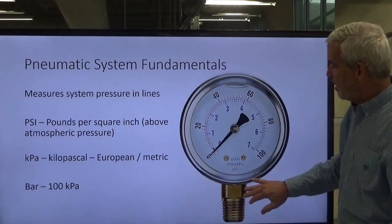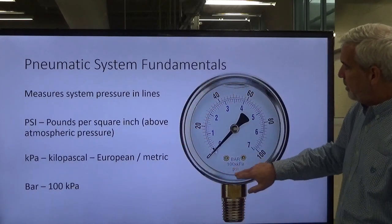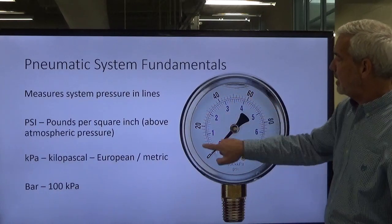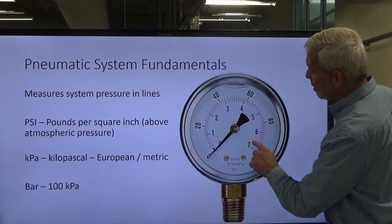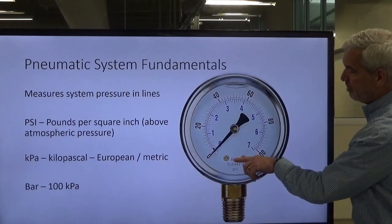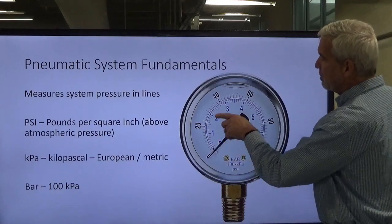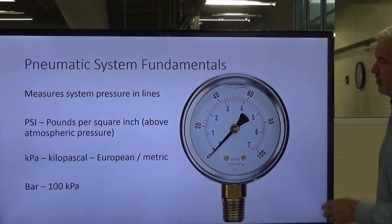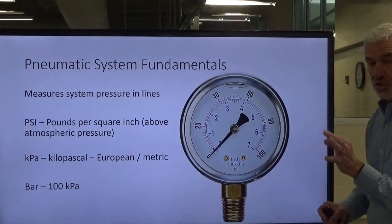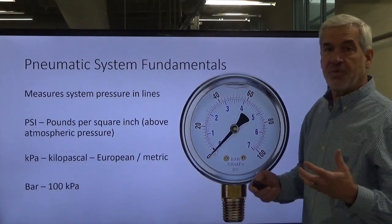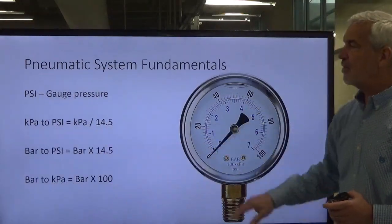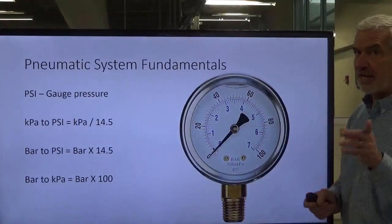On this gauge here, the PSI is written in black, so the numbers in black on the scale are reading in PSI. The numbers on the inside are much lower, they're blue, and the word bar is in blue. It goes from about 0 to 7 bar, roughly the equivalent to 100 pounds.